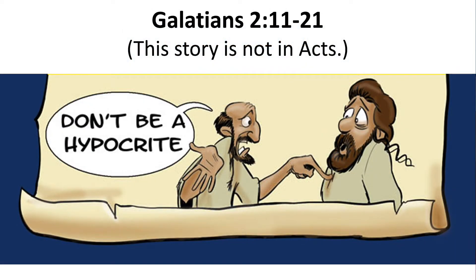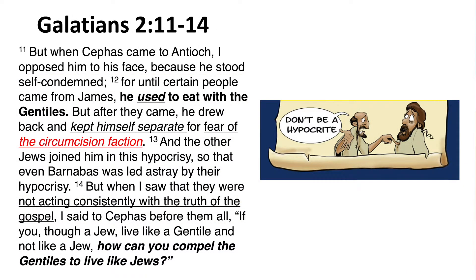There's one more story in verses 11 through 21 that's not found in the book of Acts, and Paul tells it to them: 'But when Cephas — that's Peter — came to Antioch, I opposed him to his face because he stood self-condemned. For until certain people came from James, he used to eat with the Gentiles. But after they came, he drew back and kept himself separate for fear of the circumcision faction. And the other Jews joined him in this hypocrisy, so that even Barnabas was led astray by their hypocrisy. But when I saw that they were not acting consistently with the truth of the gospel, I said to Cephas before them all, If you, though a Jew, live like a Gentile and not like a Jew, how can you compel the Gentiles to live like Jews?'